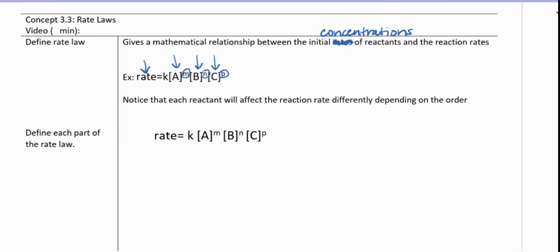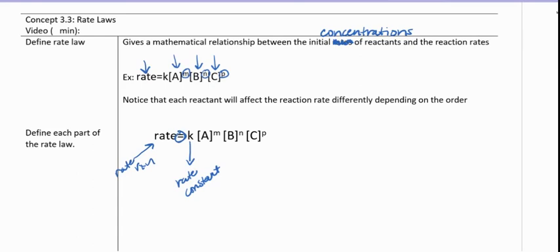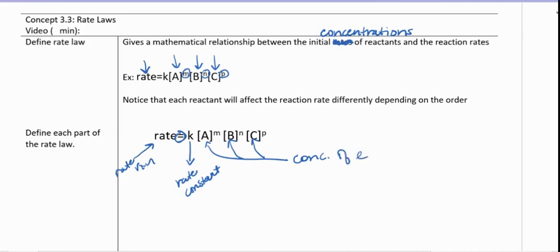There are several pieces to this rate law expression. First, the expression is set equal to the rate of reaction. It's equal to some constant — the rate constant — which is specific for that reaction at that temperature. So the rate constant is both temperature dependent and reaction dependent. Then we have the concentrations of each reactant. If there are more reactants, you'd have more things listed; if fewer, fewer. Each of those reactants is raised to a power, which we call the order.